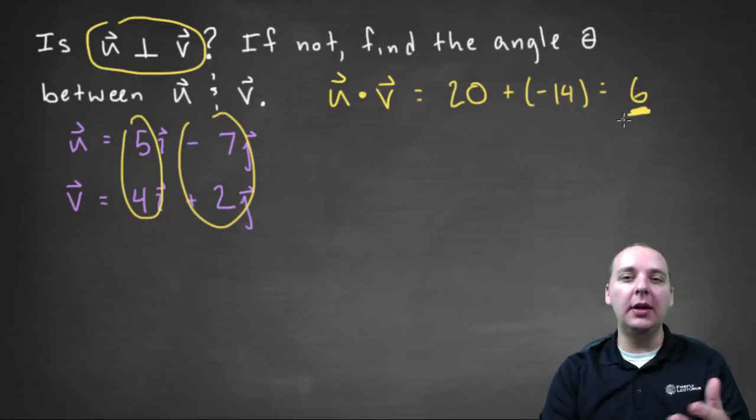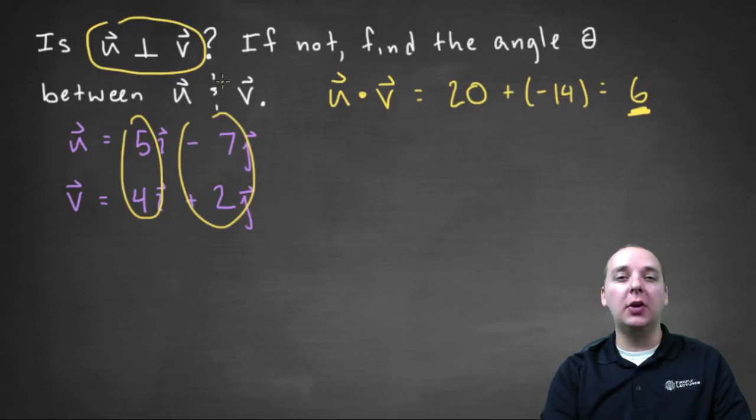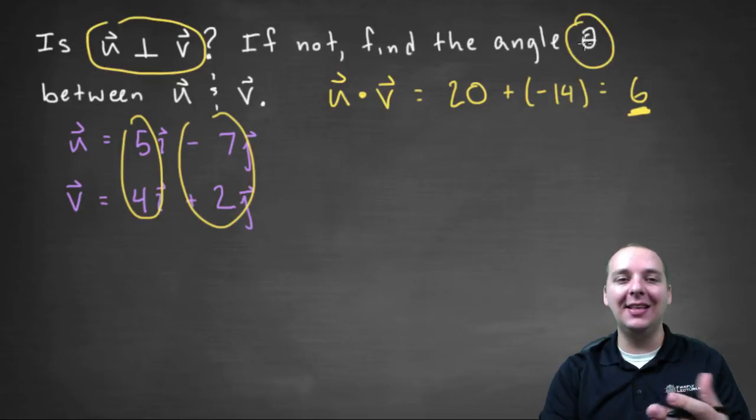Now that's kind of disappointing that we get six. It's not zero, which means that they're not orthogonal. This means they don't meet at a right angle. So we have to go a step farther and actually find whatever that theta is between the two angles.